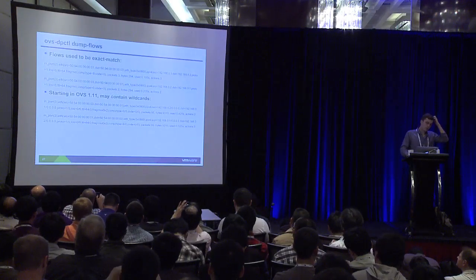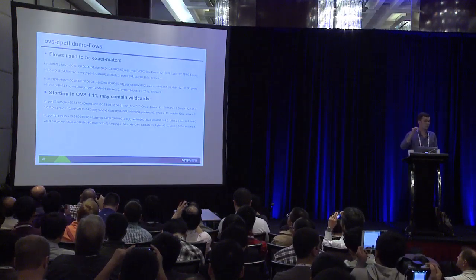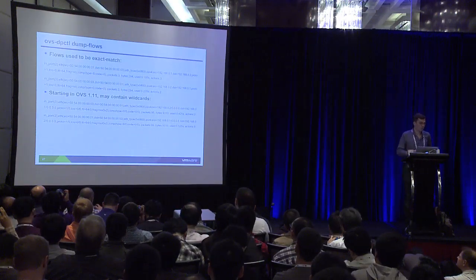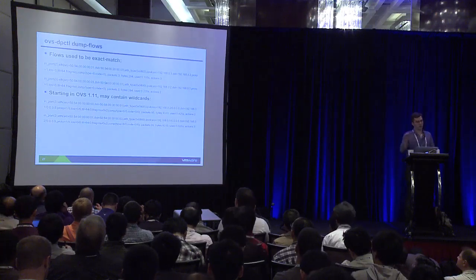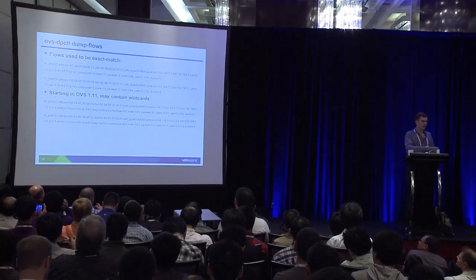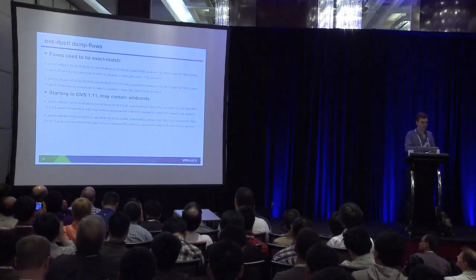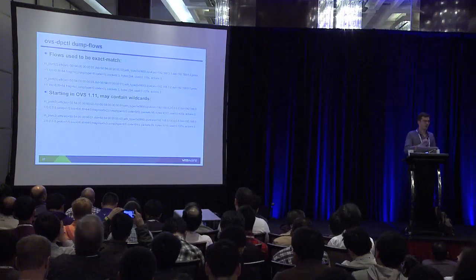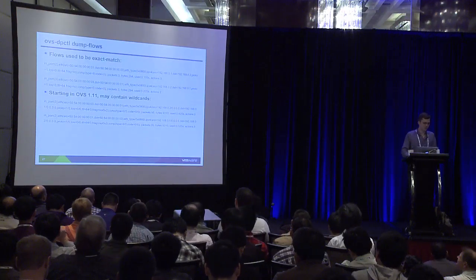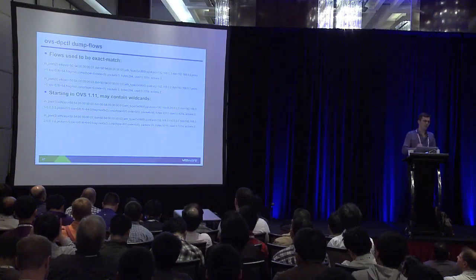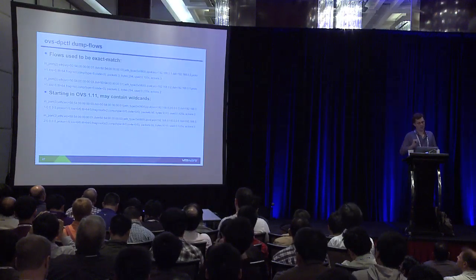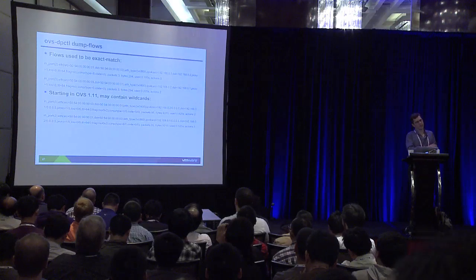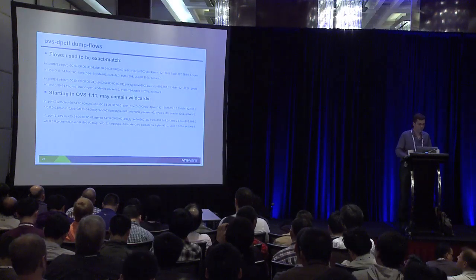Here's an example of ovs-dpctl dump-flows — the flow table in the kernel. Prior to 1.11, the flow entries were always exact match. You can see the definition of the flow — even though user space was configured to just do normal processing, we're still matching on the ICMP type and ICMP code. In OVS 1.11, when you run this command there's a slash and then a mask, and the mask shows zero for everything in the layer-three addresses and up.